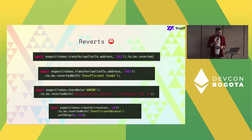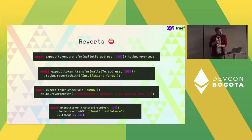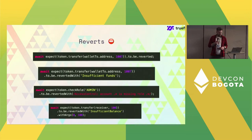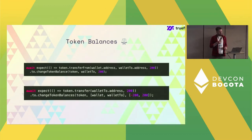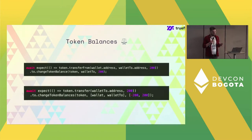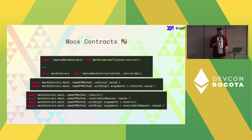Reverts are also very important to test and have a very nice syntax in Waffle. We can test whether something is reverted, be very precise about the reverting reason — the error message — and with one of the newest features we can check the arguments of the revert, which mirrors the latest Solidity feature. We also have a wrapper for token balances, since this is something tested very often. We can check whether a transaction modifies the balance of some token on a wallet or on a pair or triple of wallets.